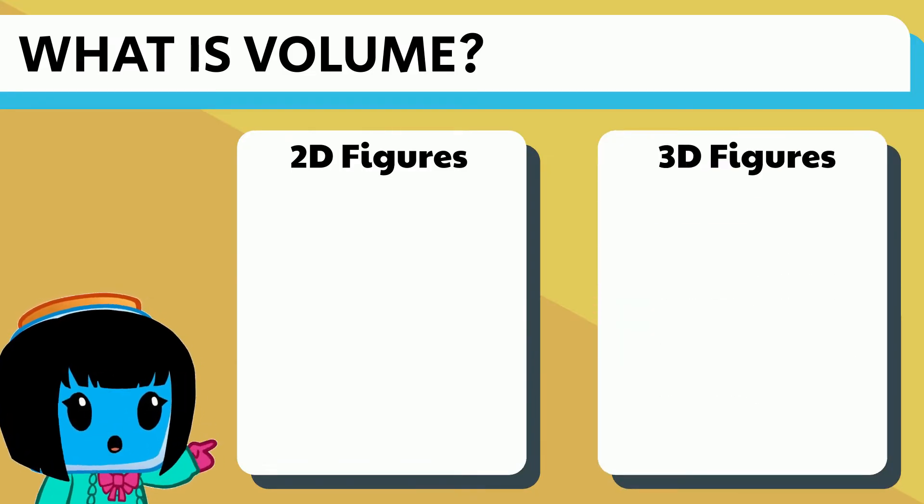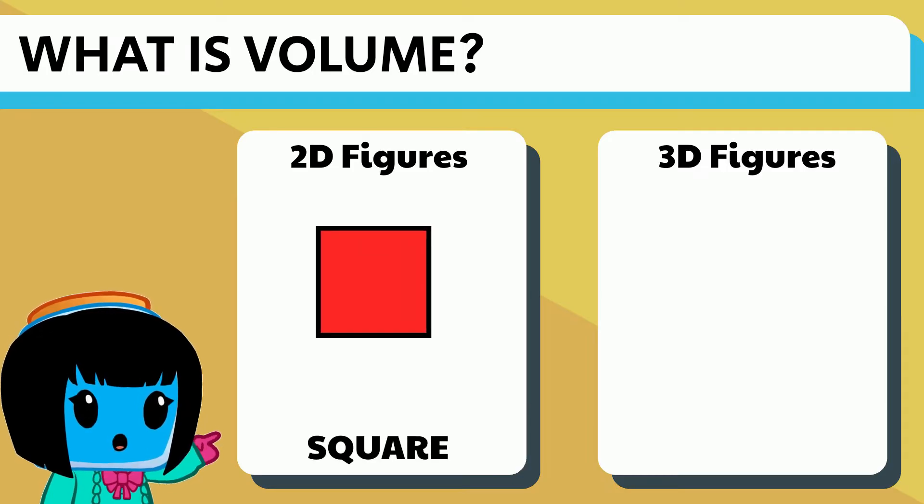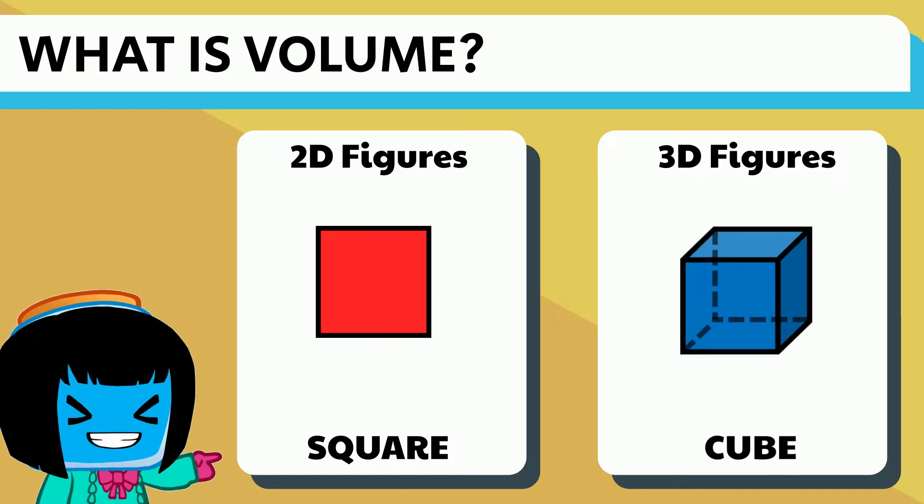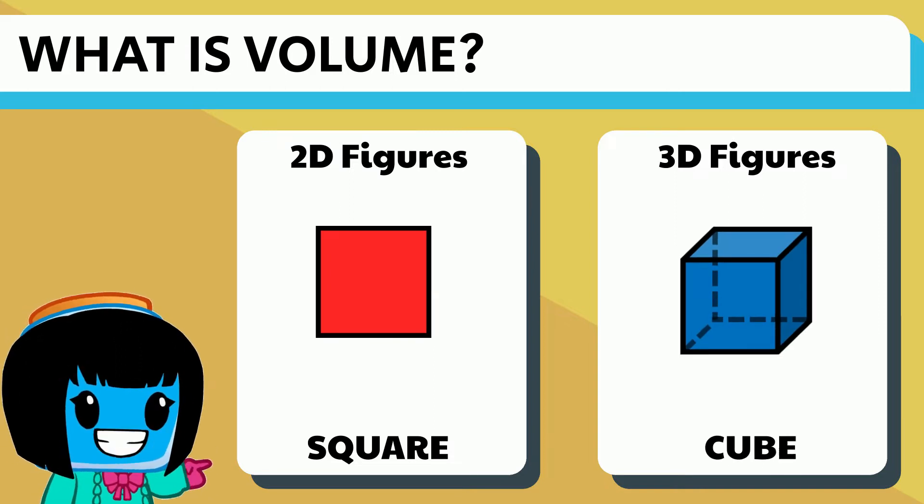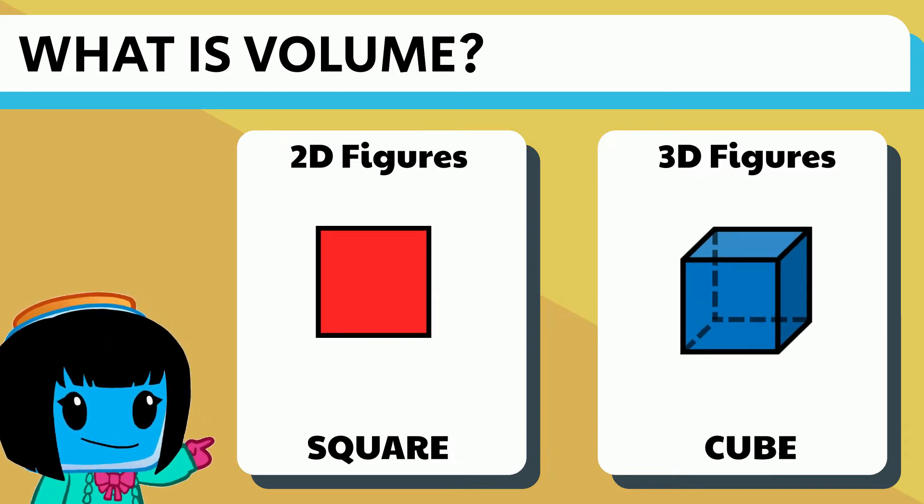An example of a two-dimensional figure is a square. An example of a three-dimensional figure is a cube. Let's take a look at both and compare and contrast them.